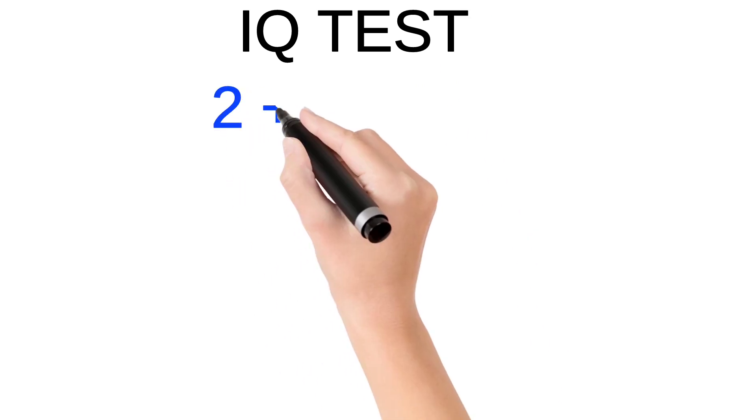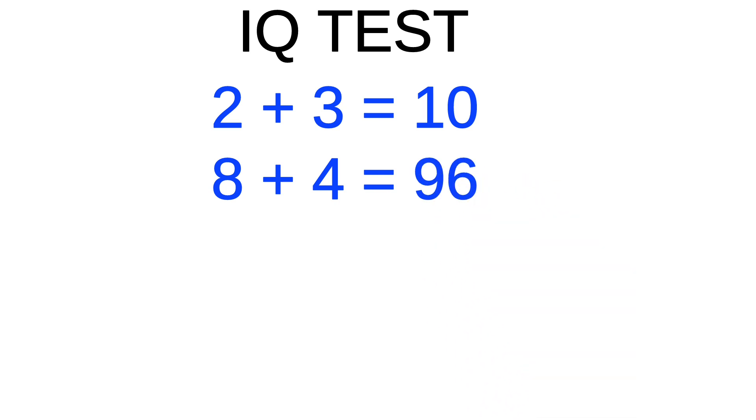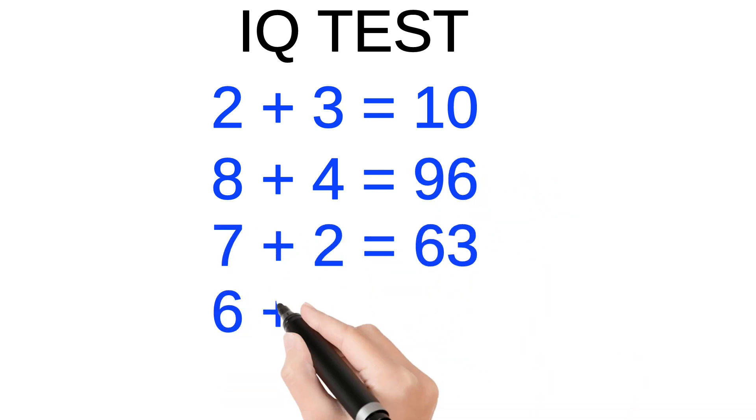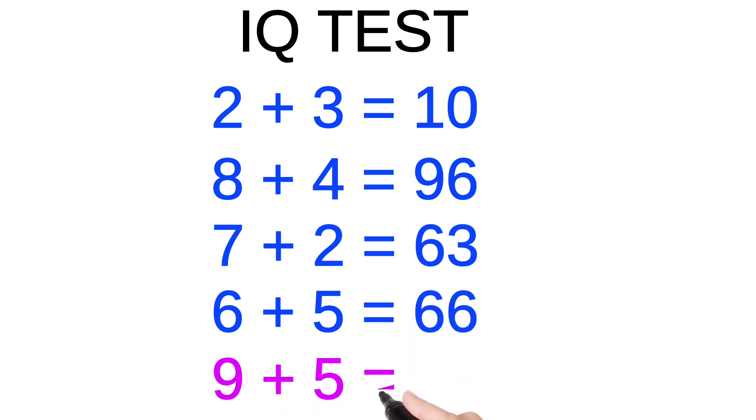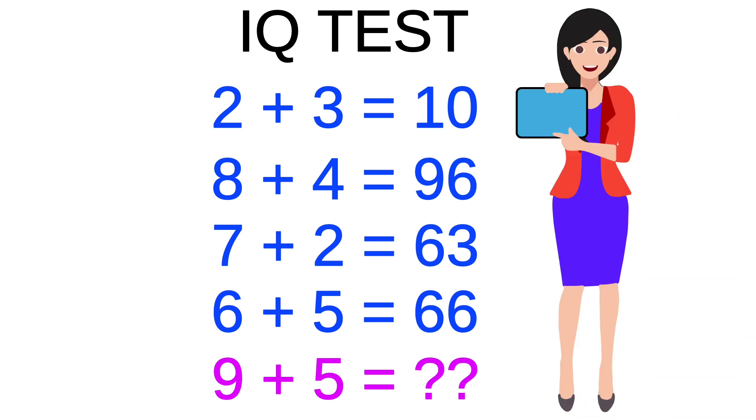If 2 plus 3 equals 10, 8 plus 4 equals 96, 7 plus 2 equals 63, 6 plus 5 equals 66, then what will be the value for 9 plus 5? To solve this kind of question we need to understand the pattern, so let's try to find out the pattern.